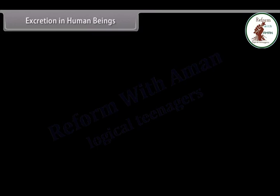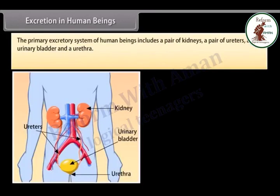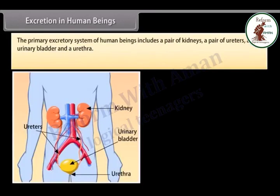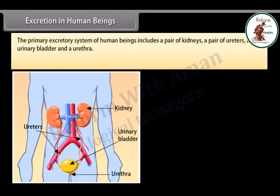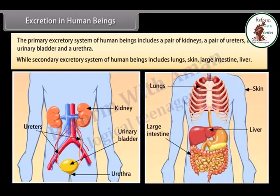The primary excretory system of human beings includes a pair of kidneys, a pair of ureters, a urinary bladder, and a urethra. The secondary excretory system of human beings includes the lungs, skin, large intestine, and liver.